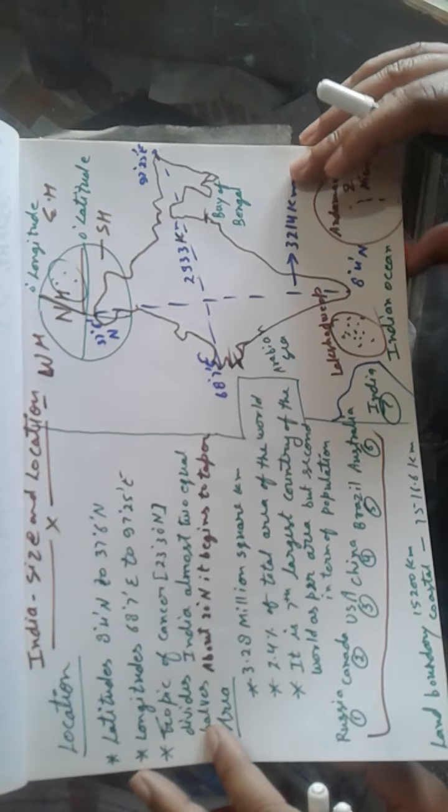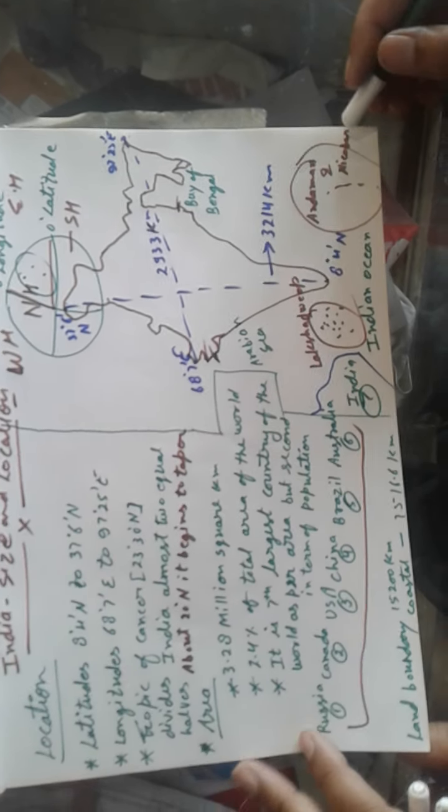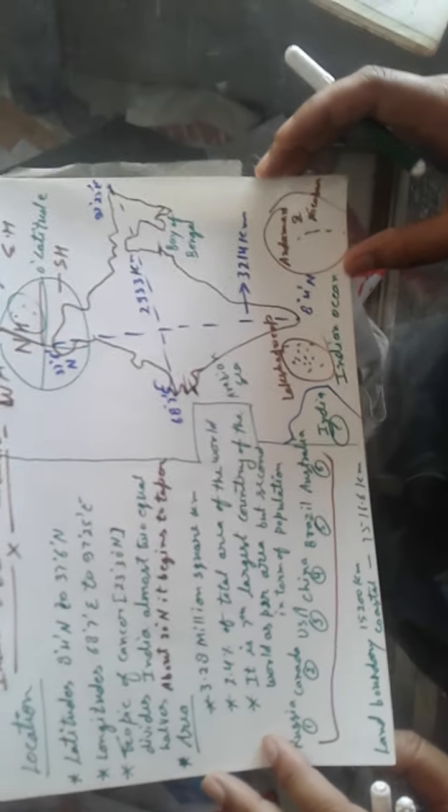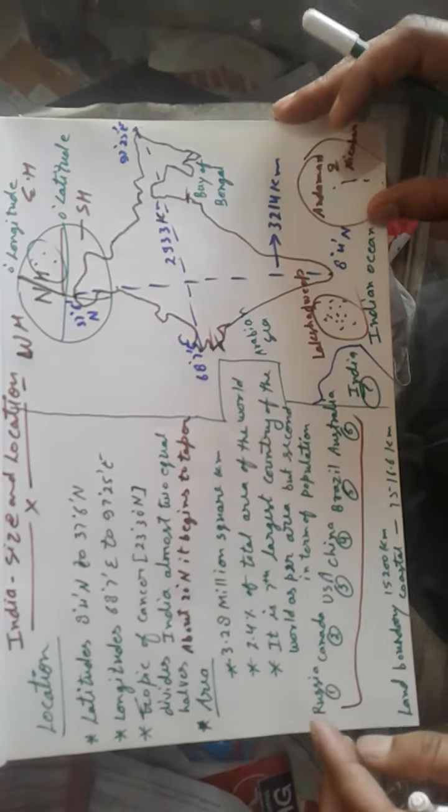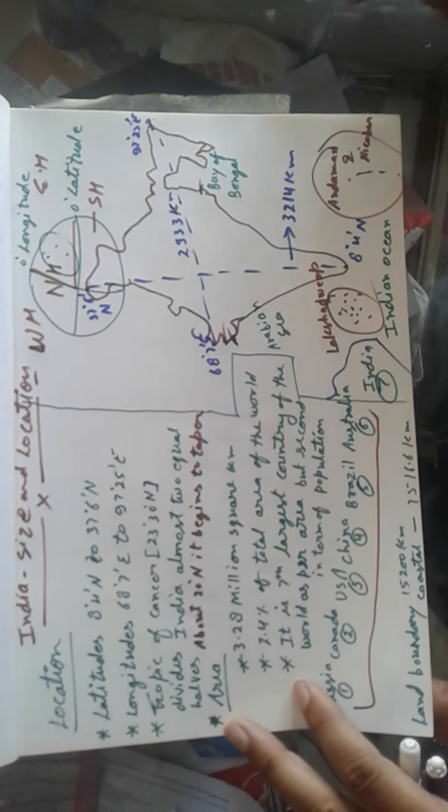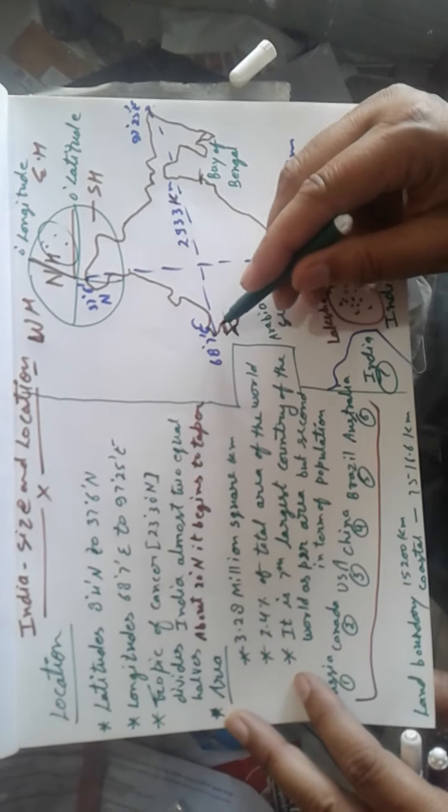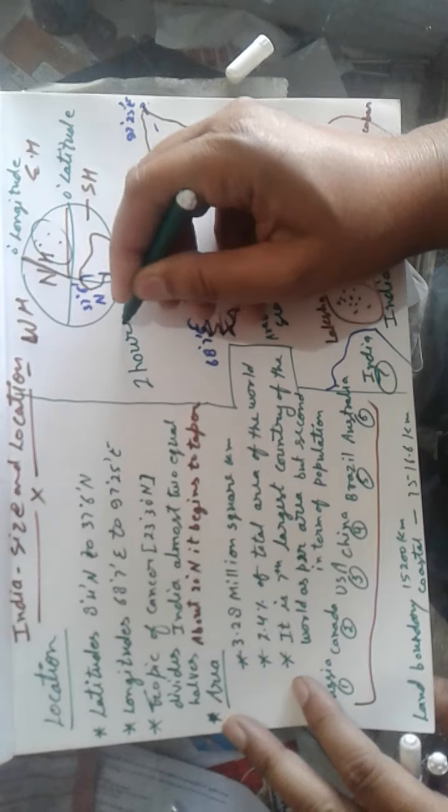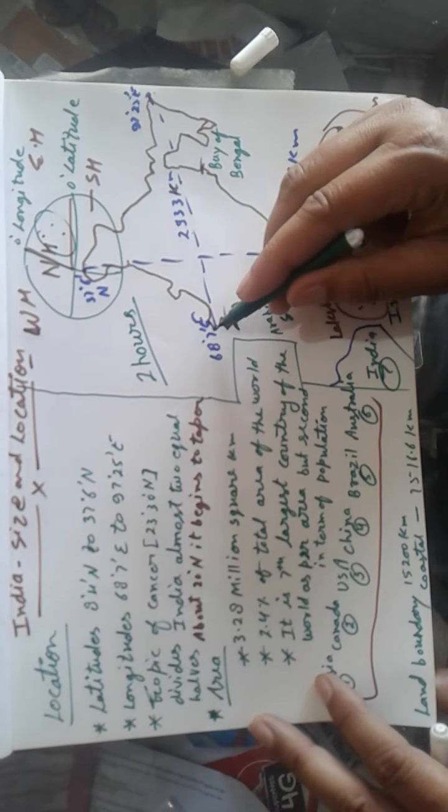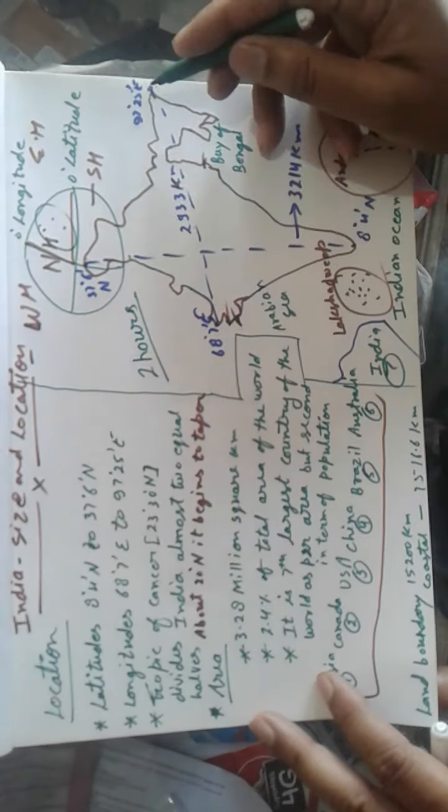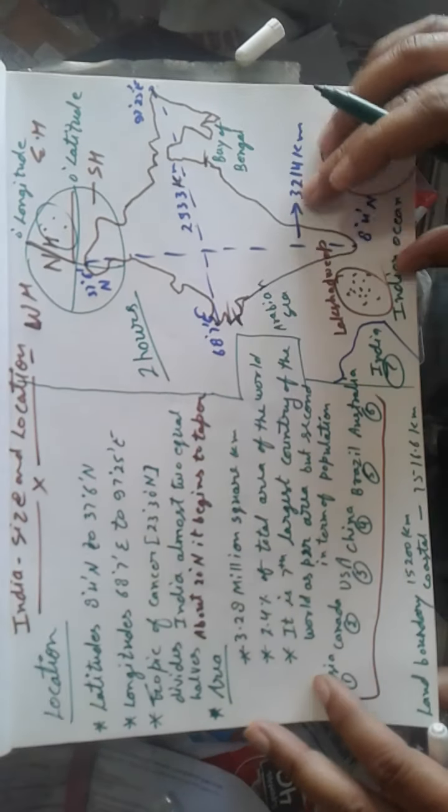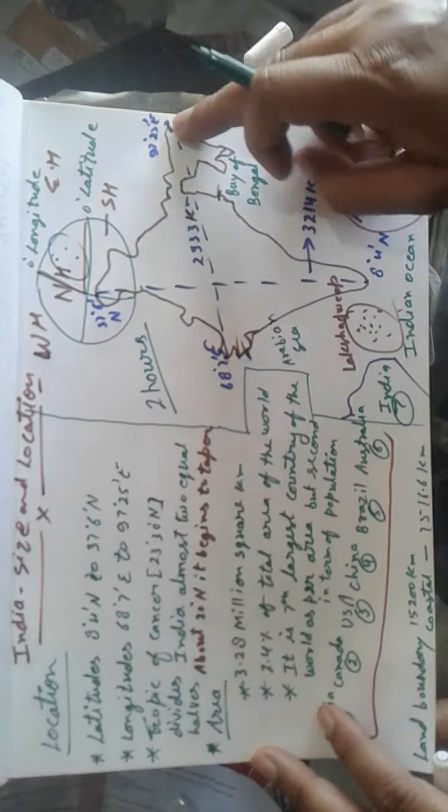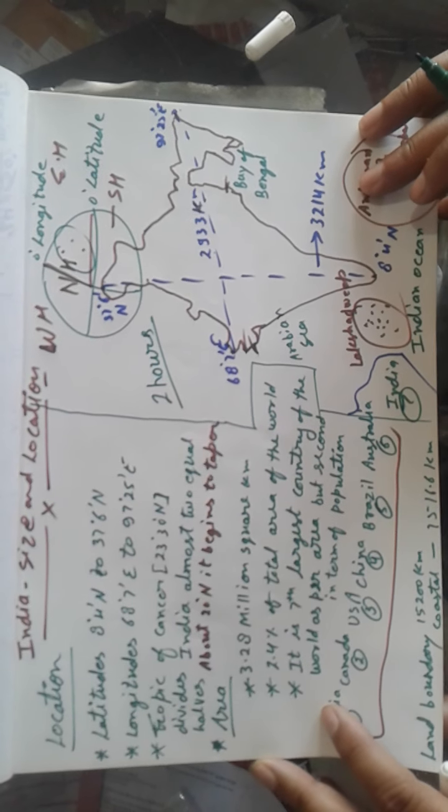Welcome again Class 9th students. In the last video we discussed area, and today we will discuss the time zone of India. The time duration from Gujarat to Arunachal Pradesh is about two hours difference. That means when there is sunrise in Arunachal Pradesh, Gujarat gets sunrise about two hours later.